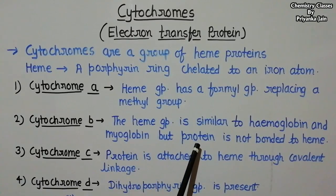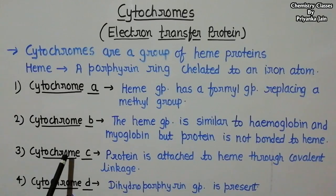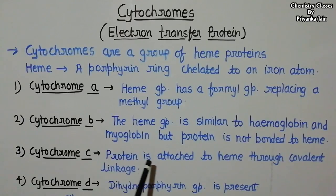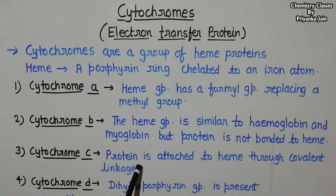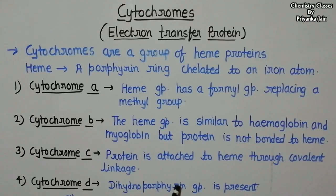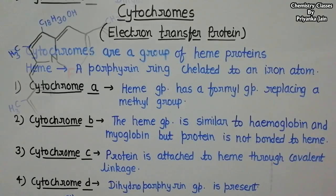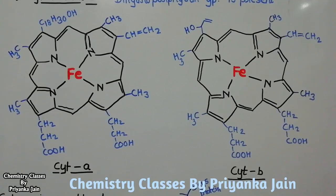In cytochrome b, the protein is not bonded to the heme. The third type is cytochrome c, in which the protein is attached to the heme by covalent linkage. Another type is cytochrome d, in which there is a dihydroporphyrin group present.